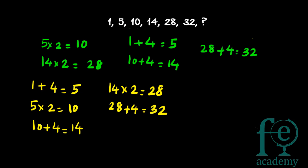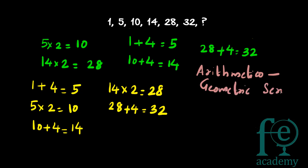This is an example of an arithmetic-geometric series, where both addition and multiplication are taking place. It is not compulsory that only addition or only multiplication should occur throughout a series — both operations can take place in the same series, alternately. So the next step will be 32 into 2 equals 64, and that is your answer.